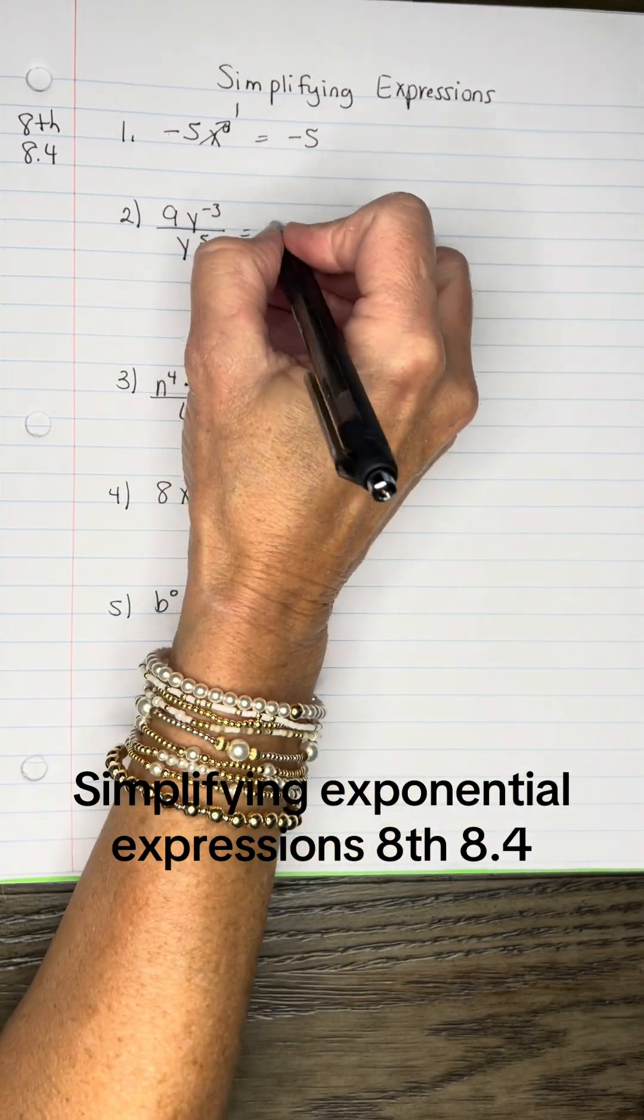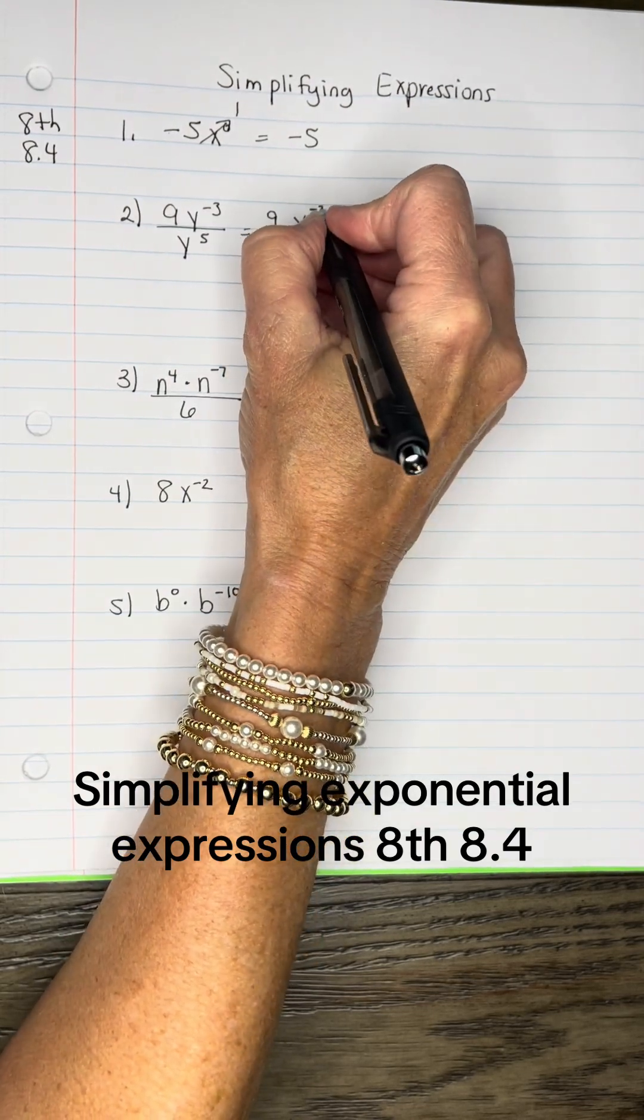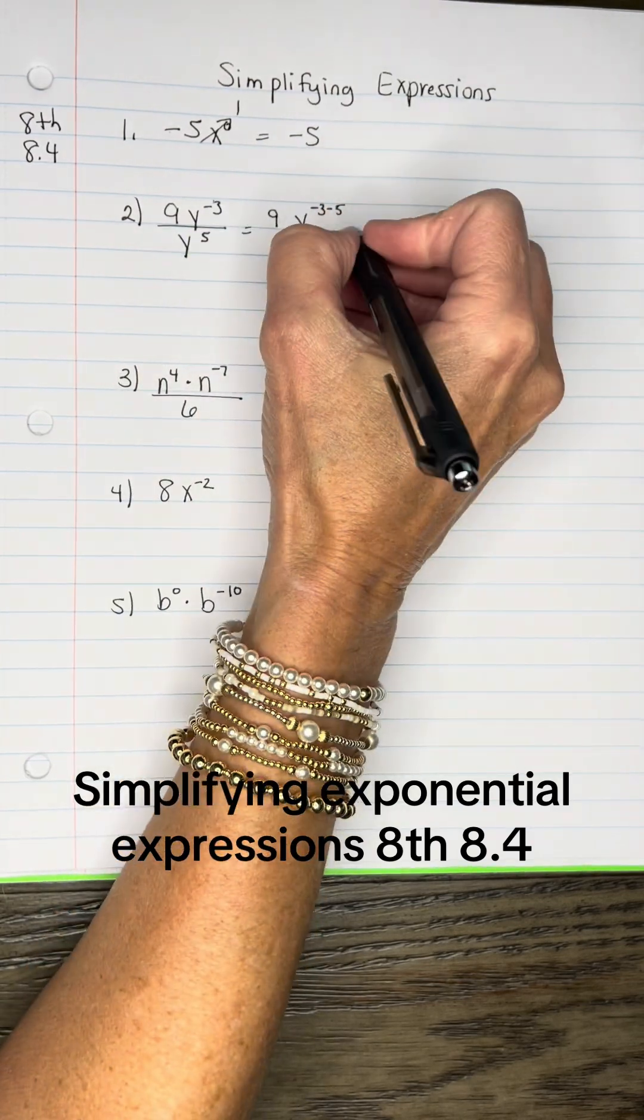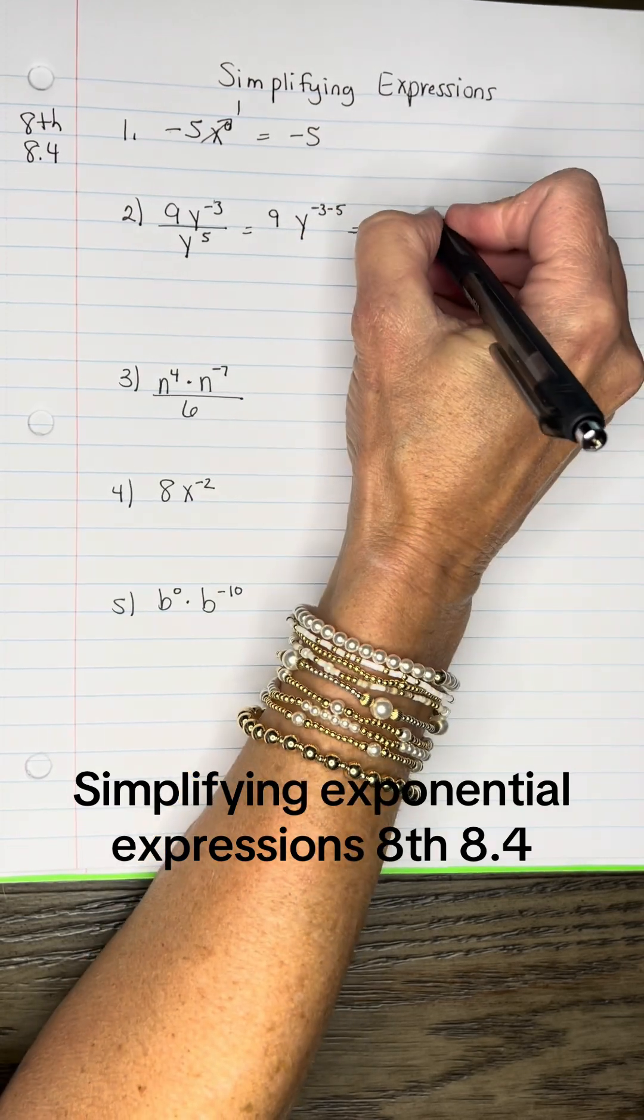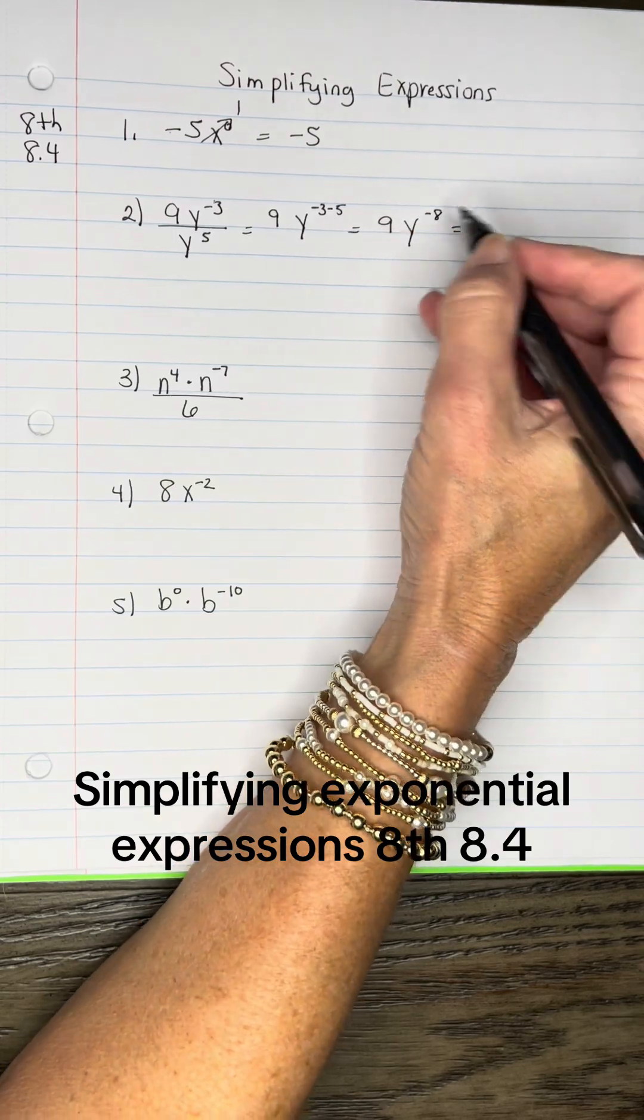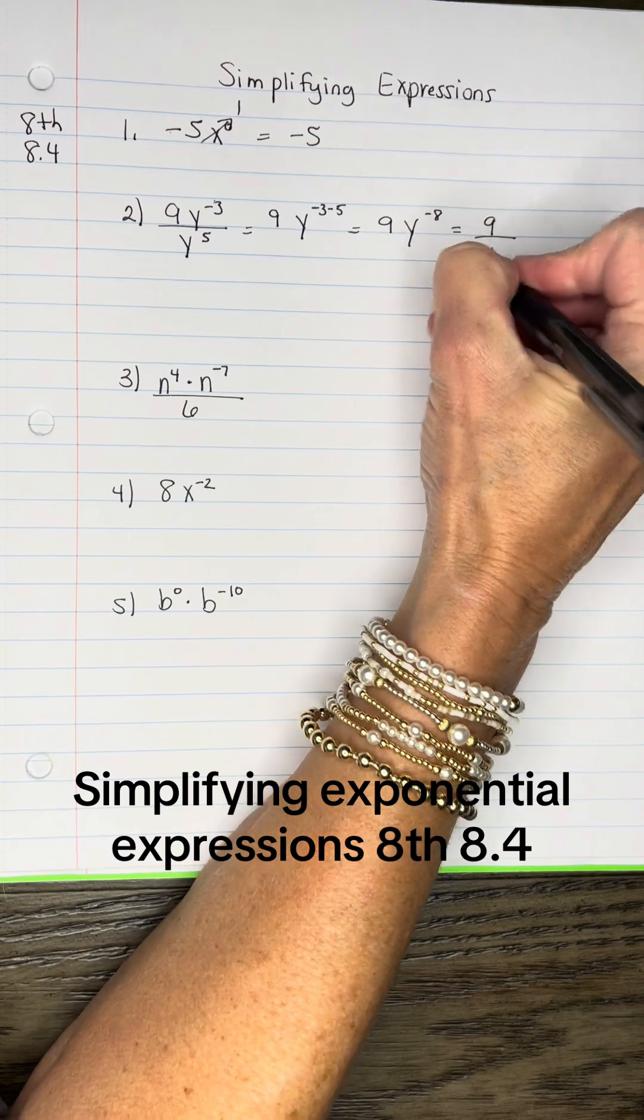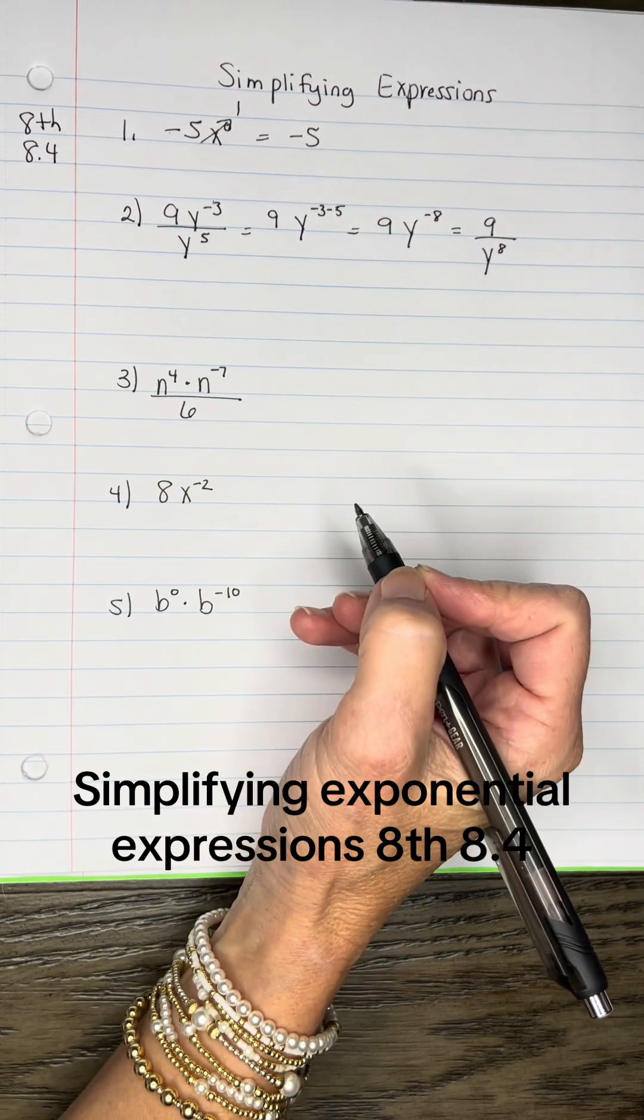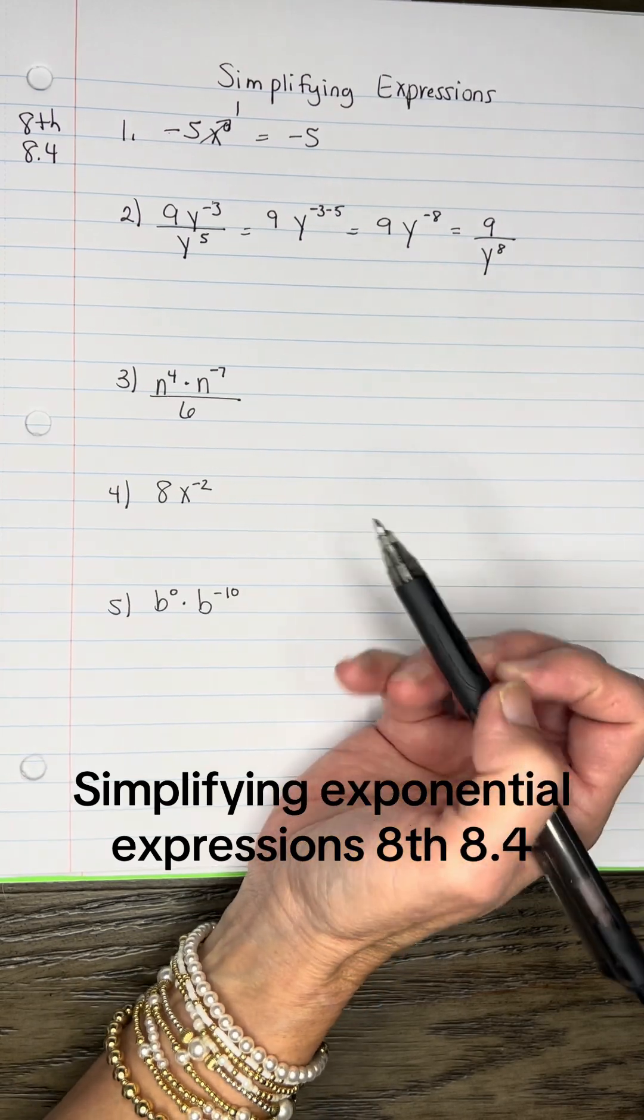Alright, so here we have 9, and then Y, we've got negative 3 that must subtract 5 from it, since it's a quotient part there. So I have 9, and negative 3 minus 5 is negative 8, but we're not allowed to have a negative exponent, so my 9 will stay in the numerator. My Y will go to the denominator, so that the 8 can become positive. So I have 9 over Y to the 8th power.